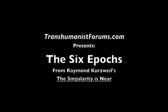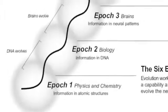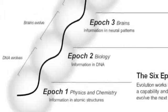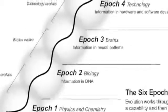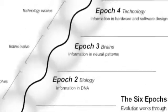The Six Epochs from Raymond Kurzweil's The Singularity is Near. Evolution is a process of creating patterns of increasing order. I believe that it's the evolution of patterns that constitutes the ultimate story of our world.